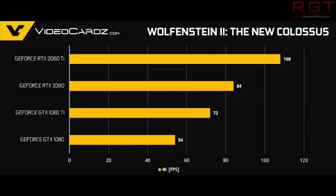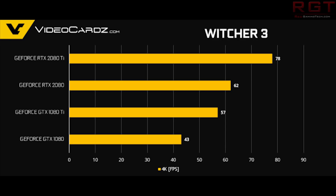Wolfenstein: The New Colossus — Bethesda have announced Wolfenstein 3 is in development, which is great. In SDR at 4K with everything maxed: 54 FPS for the GTX 1080, 84 FPS for the RTX 2080, 72 FPS for the GTX 1080 Ti, and over 100 FPS for the RTX 2080 Ti. In The Witcher 3 — extremely demanding — you get 43 FPS for the 1080, 57 FPS for the 1080 Ti, 62 FPS for the 2080 (5 FPS higher than the 1080 Ti), and 78 FPS for the 2080 Ti.